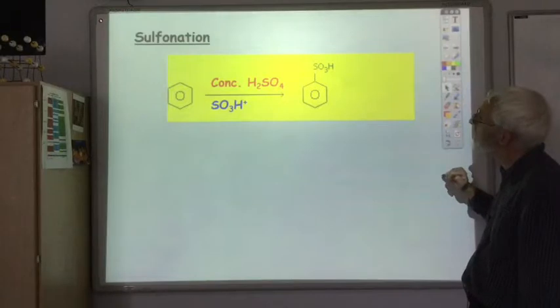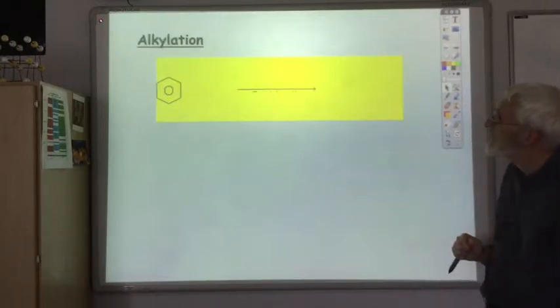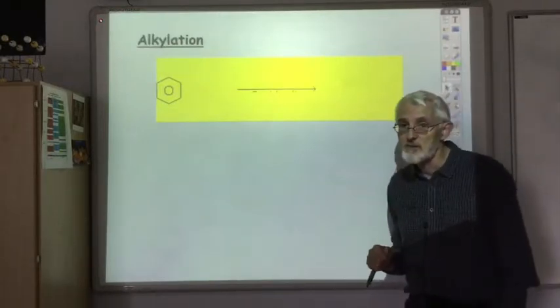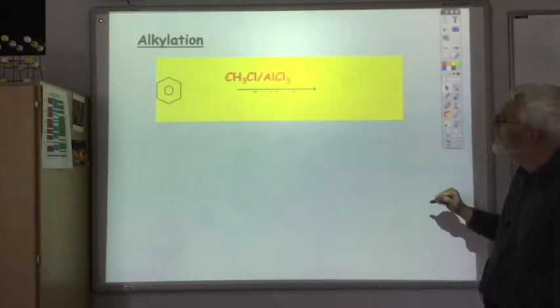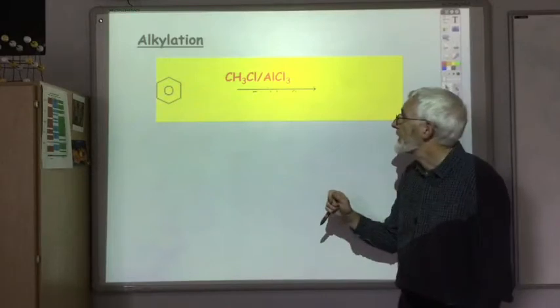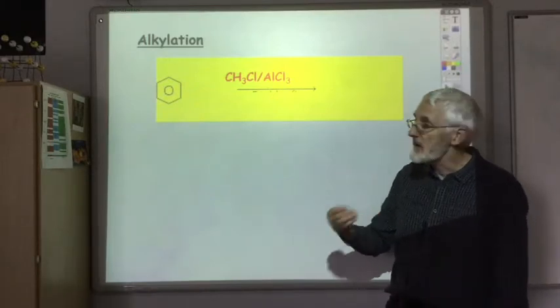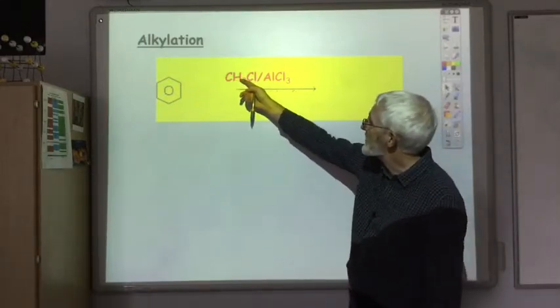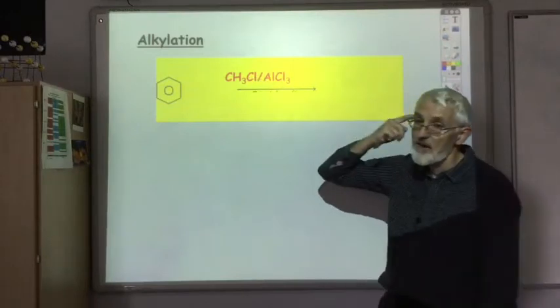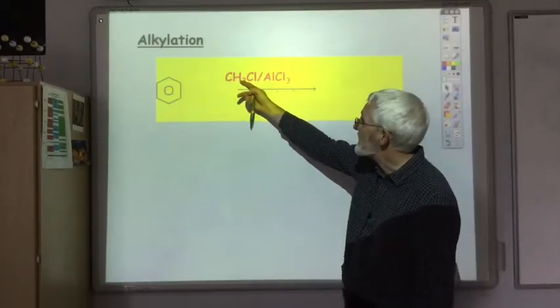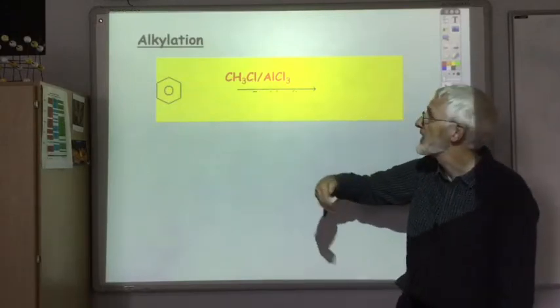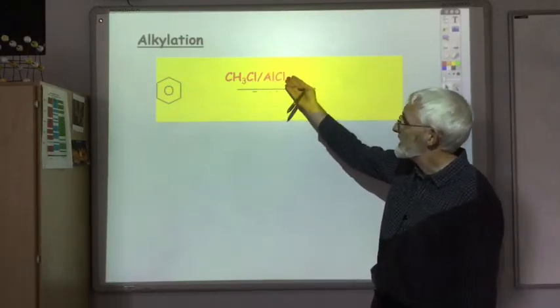The final reaction is an alkylation. This is where you add an alkyl group. The alkyl group I'm adding is a methyl group, so I've got CH3Cl here. If I wanted to add an ethyl group, it would be CH3CH2Cl, etc. And aluminium chloride is a catalyst.